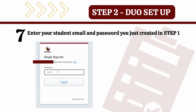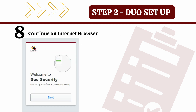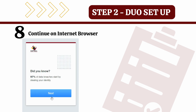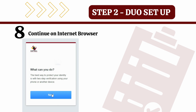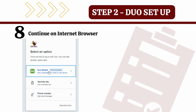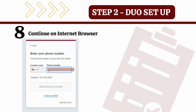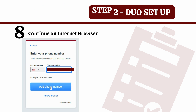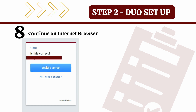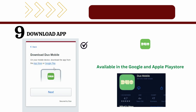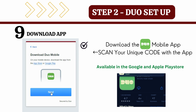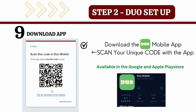Click login and you will be welcomed into your Duo account. Click Next until you are prompted to set up your push notifications by clicking the first option, Duo Mobile. Re-enter your cell phone number and click Next. Verify that it is correct.